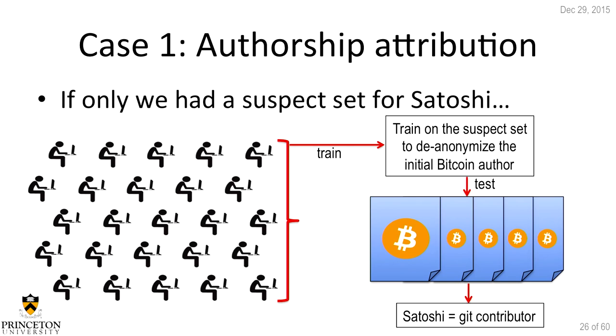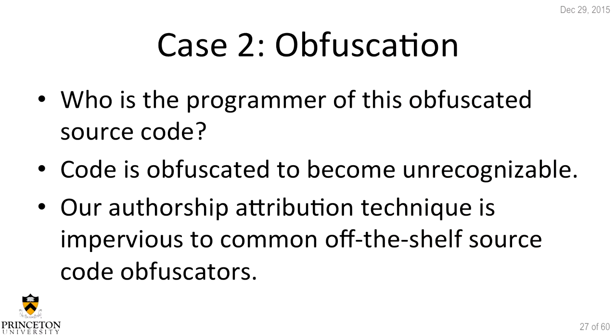How could we do this with Satoshi? We'd take a suspect set's previous code samples, train a classifier on those, then use Bitcoin's initial git commit — the first original Bitcoin code — as test data and see who in the suspect set it was written by. Many people ask who Satoshi is; unfortunately, the main suspect in our set doesn't have any former code samples, so we're leaving that slide as-is.